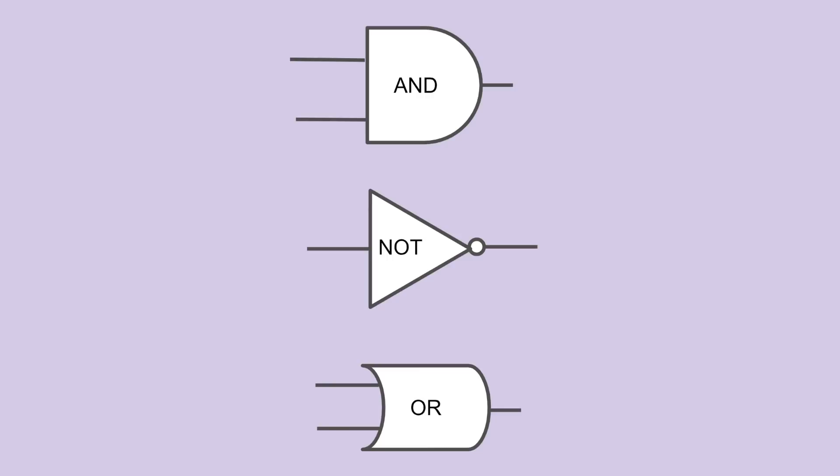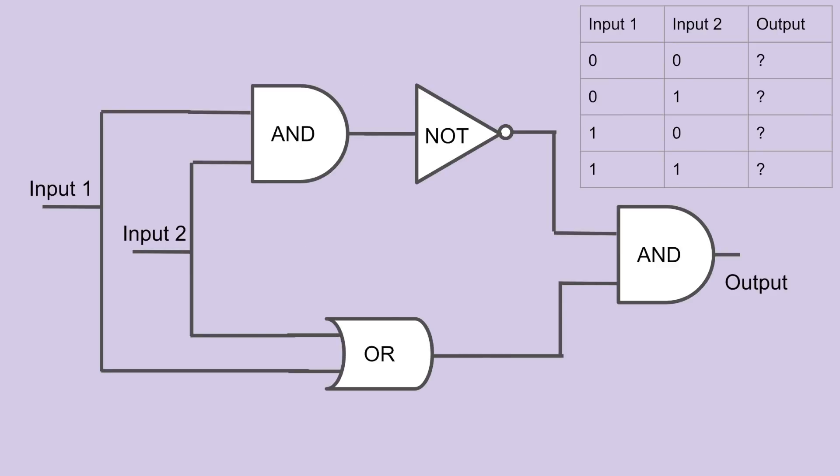We now have three of the four tools. To build the last one, we'll actually just combine three we've used so far, like this. Let's look at what the various outputs are. If both inputs are 0, then neither the AND gate nor the OR gate will output 1. The NOT gate will return the 0 into a 1, and the final AND gate will return a 0 since the inputs are NOT both 1.